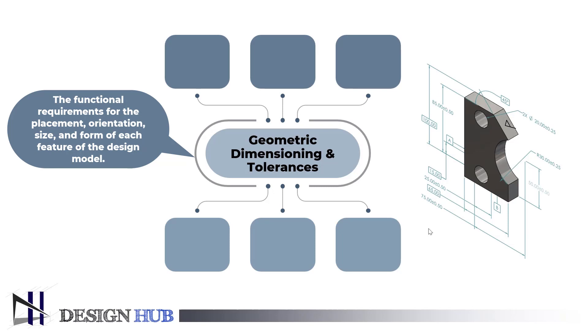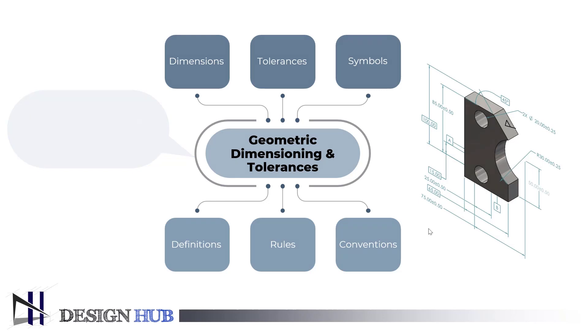GD&T is made up of dimensions, tolerances, symbols, definitions, rules, and conventions. We will see 14 useful symbols of GD&T in this series. Here are some common symbols of GD&T.